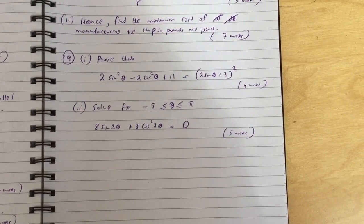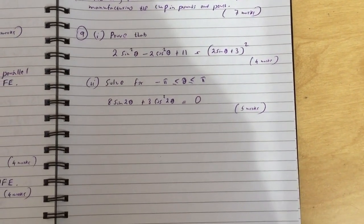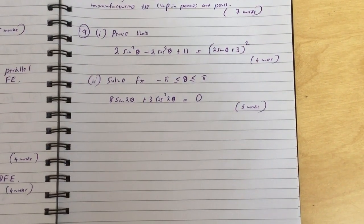Question two: solve for theta between pi and minus pi: 8 sine 2 theta plus 3 cos squared 2 theta equals 0.